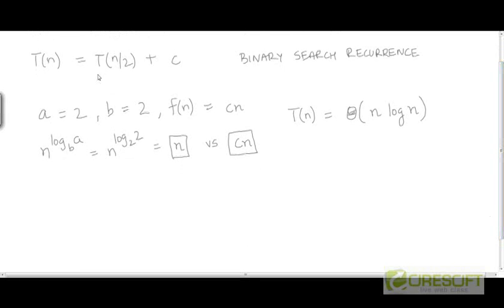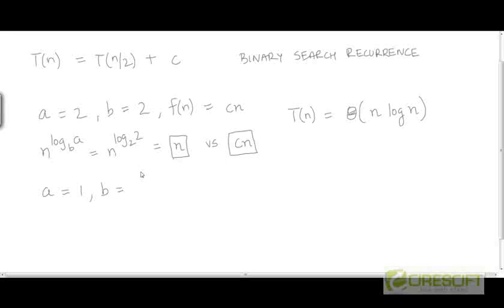Now applying Master Theorem to the binary search recurrence, we have a equal to 1, because we divide the original problem into one subproblem after checking the middle element. We basically discard one half of the array, so a is 1, and because the size of the subproblem is half of the original, b is 2.